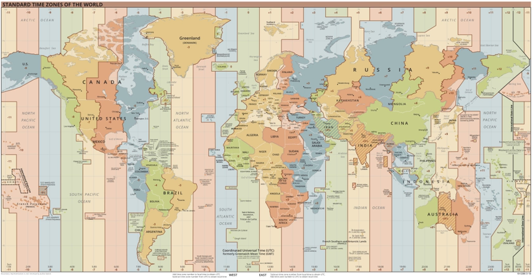The IANA Time Zone Database contains one zone for South Korea in the file zone.tab, named Asia/Seoul.